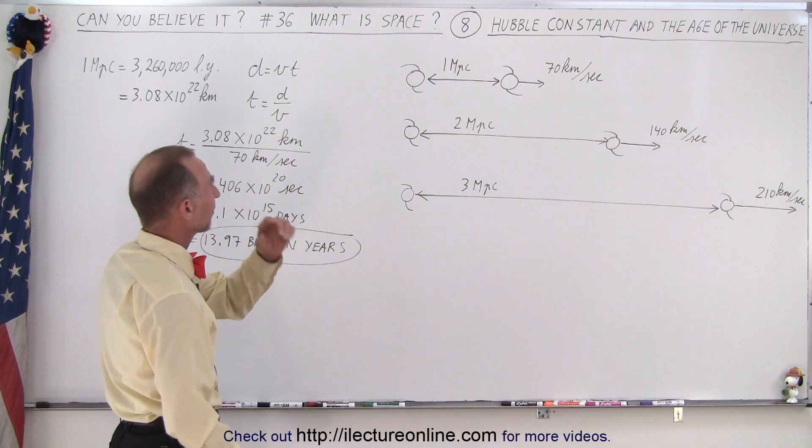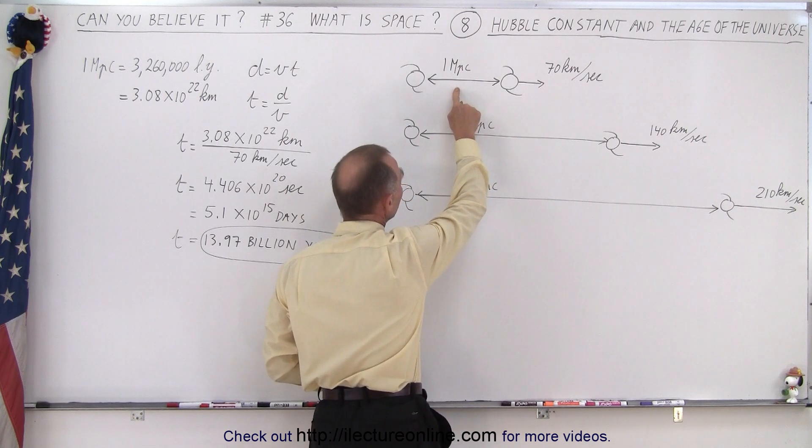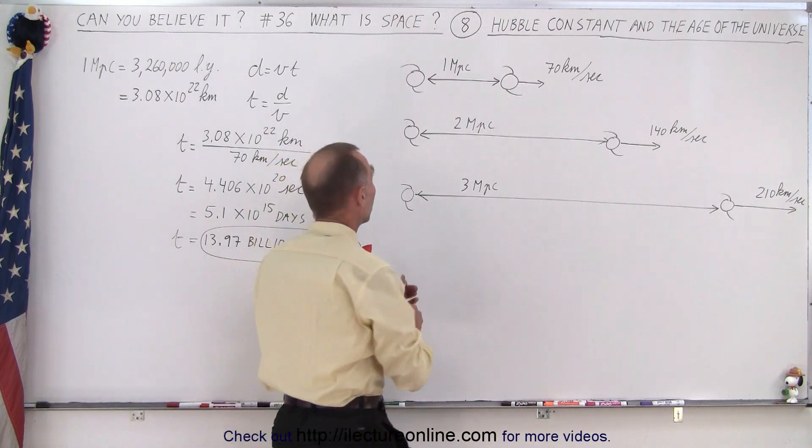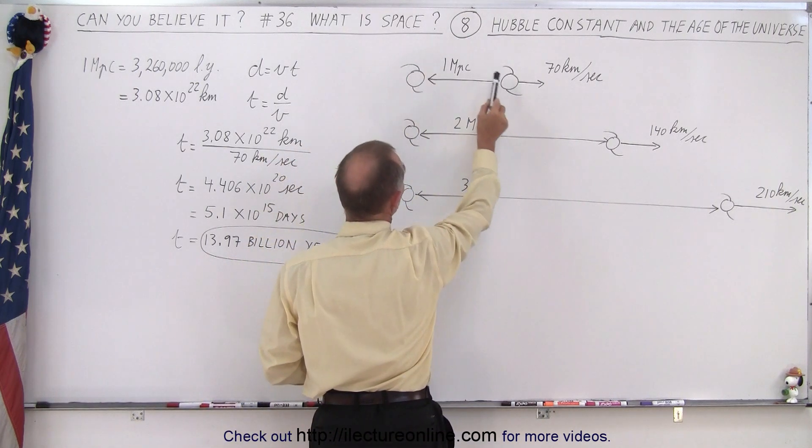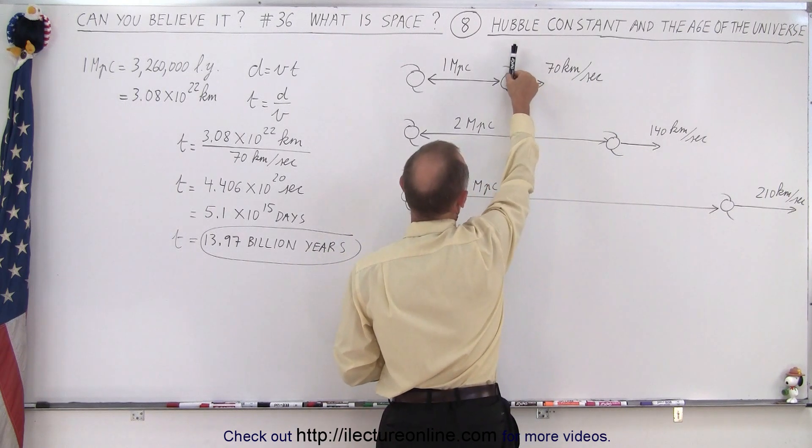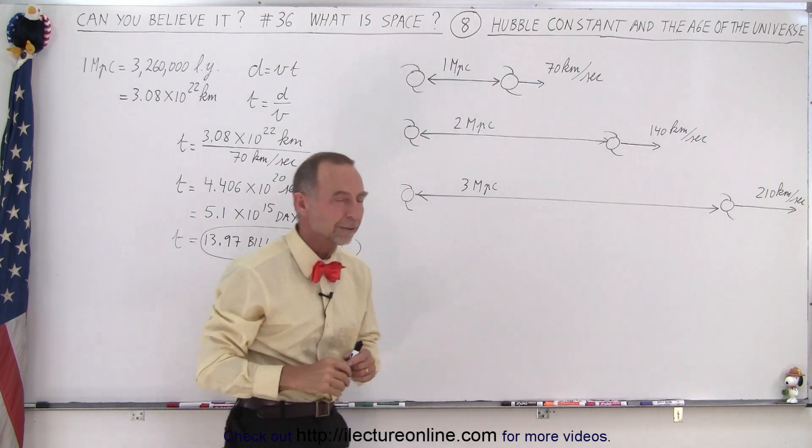So what we have to realize is that if a galaxy or two galaxies are one mega parsec apart, they're moving away from each other at 70 kilometers per second. So an observer on this galaxy will see this galaxy moving this way at 70 kilometers per second. An observer on this galaxy will see this galaxy move in the opposite direction at 70 kilometers per second.